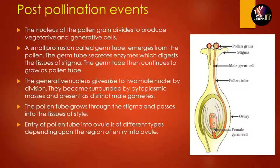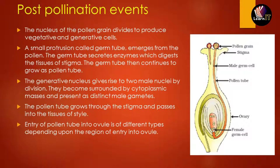This germ tube secretes enzymes which digest the tissues of the stigma. The germ tube then continues to grow as a pollen tube and will directly travel into the ovule. The generative nucleus divides to give rise to two male nuclei, which become surrounded by cytoplasmic masses and present as distinct male gametes — both individual male gametes developed inside the generative nucleus.